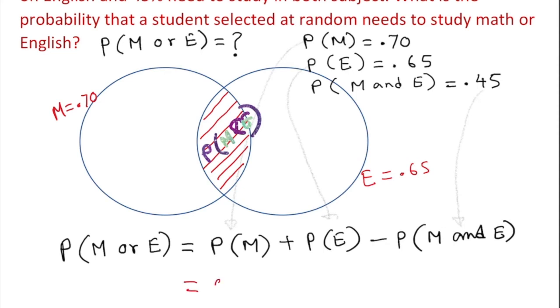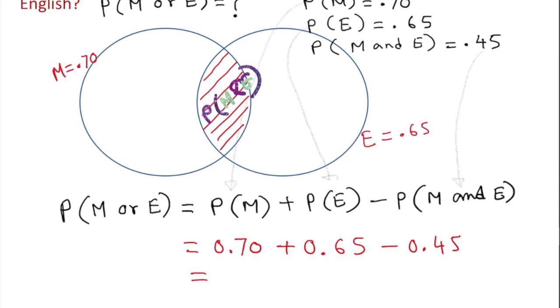0.70 plus 0.65 minus 0.45. I did it ahead of time, and it gives me 0.90.